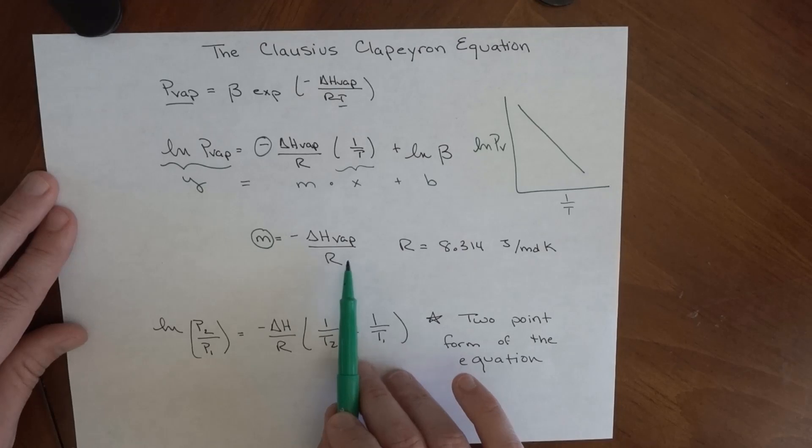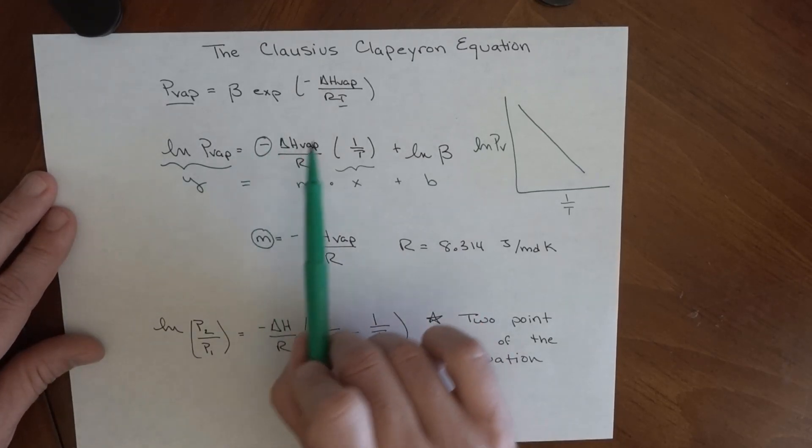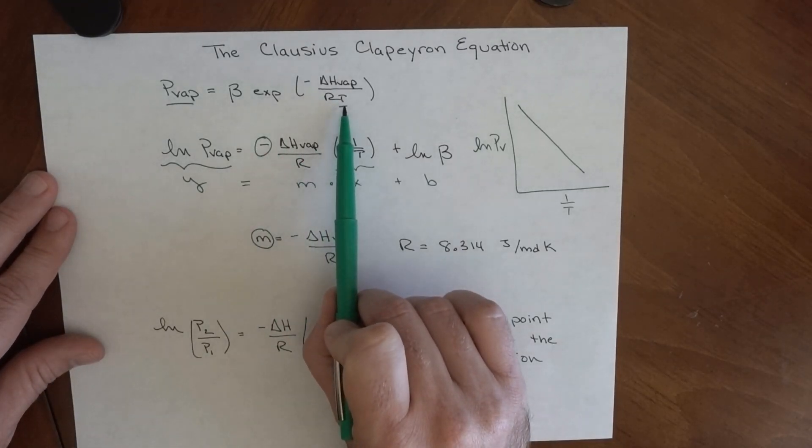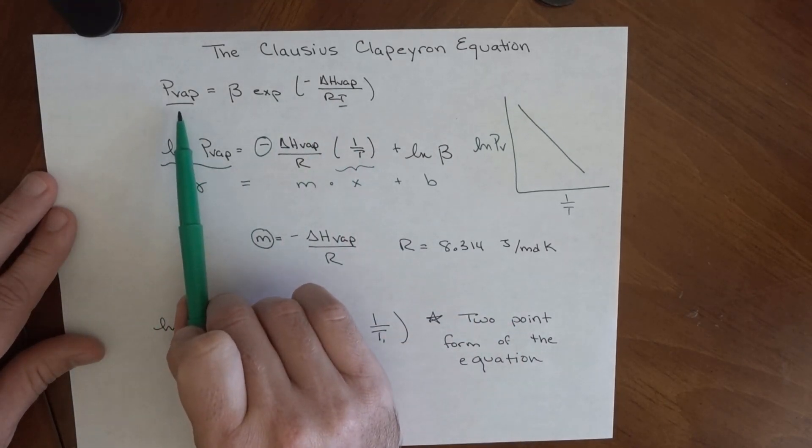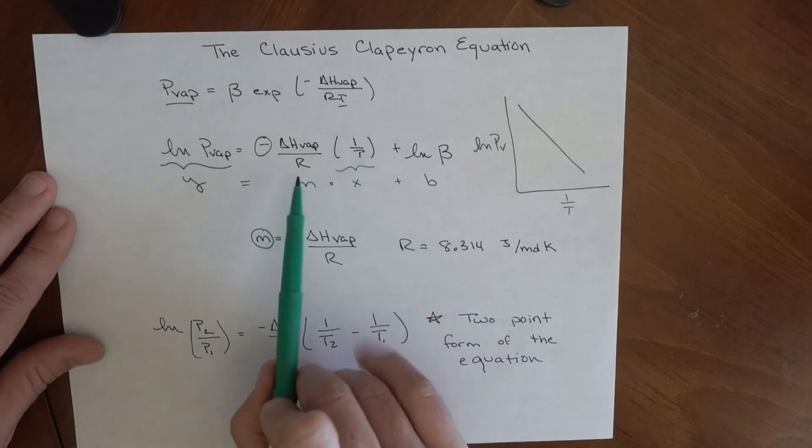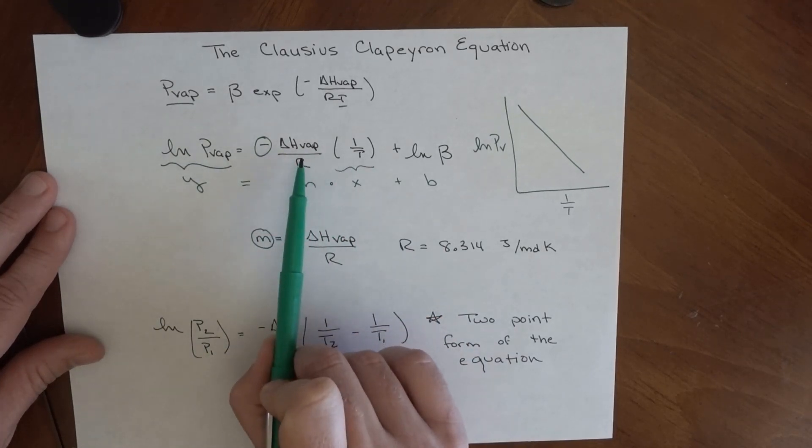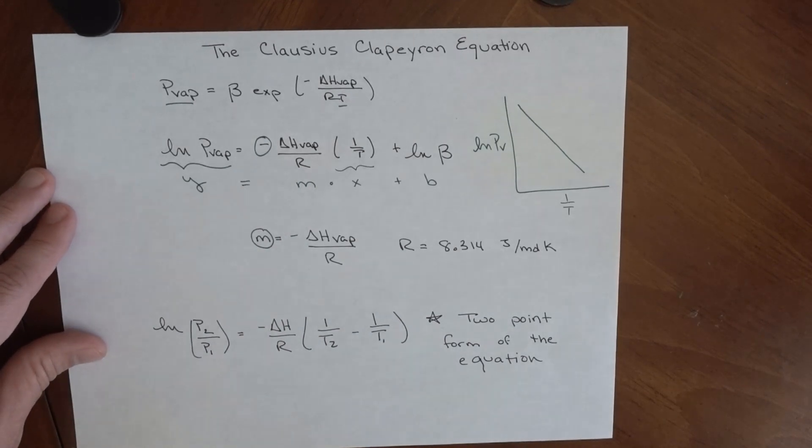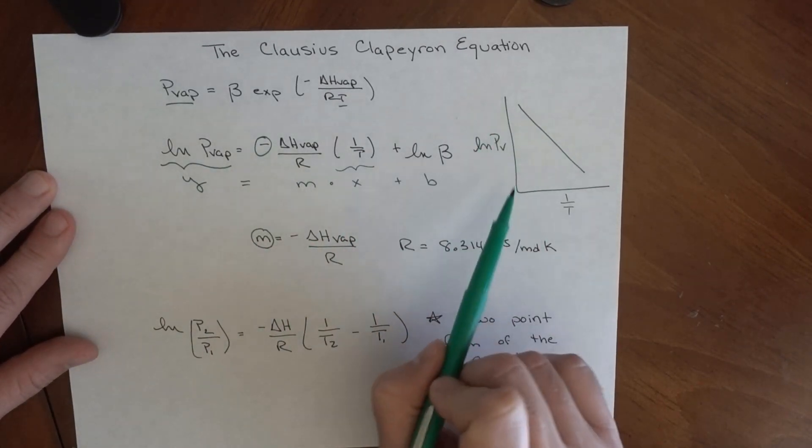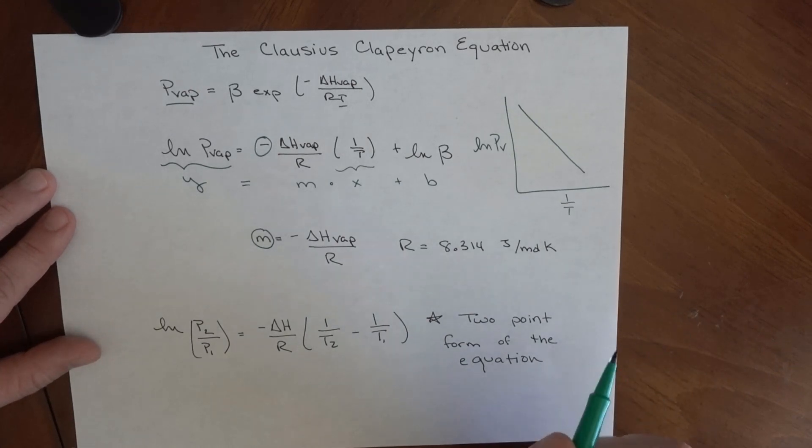This allows us to vary the temperature of something, determine its vapor pressure, and then from those two things, you get another fundamental quantity, which is the enthalpy of vaporization. So it's actually quite a powerful thing, the Clausius-Clapeyron equation. And there is a two-point version as well.